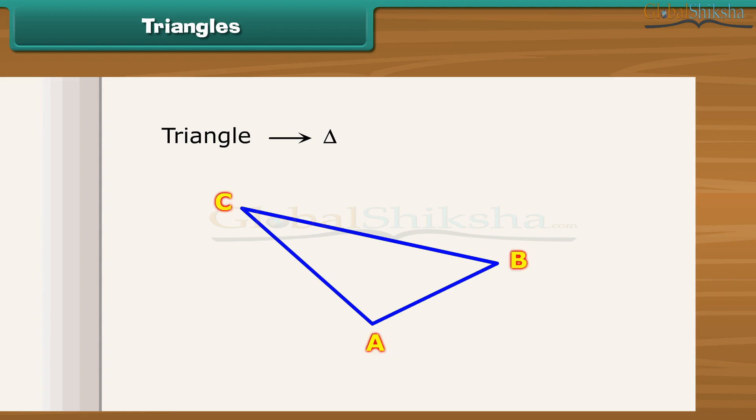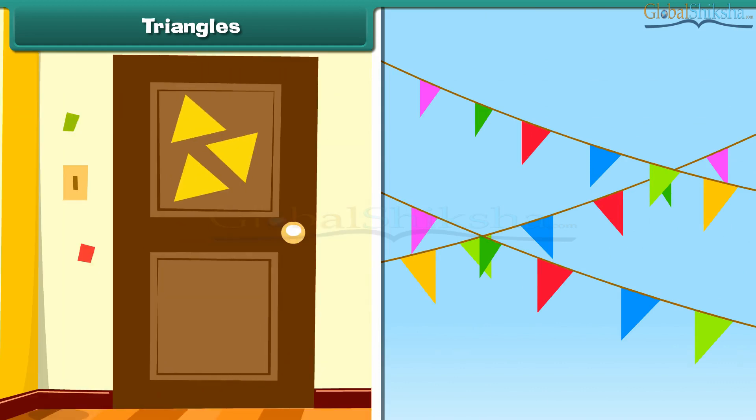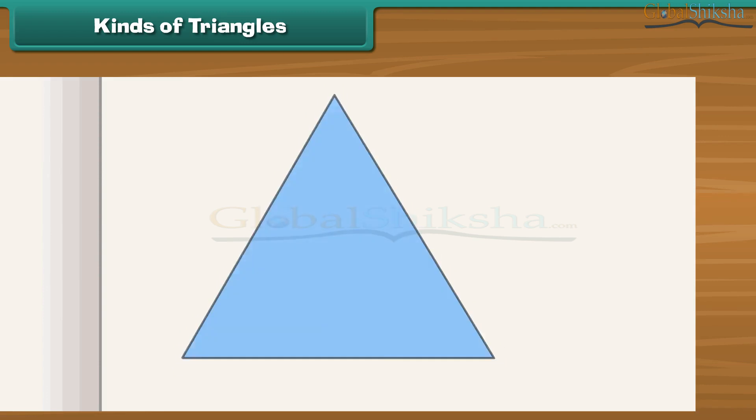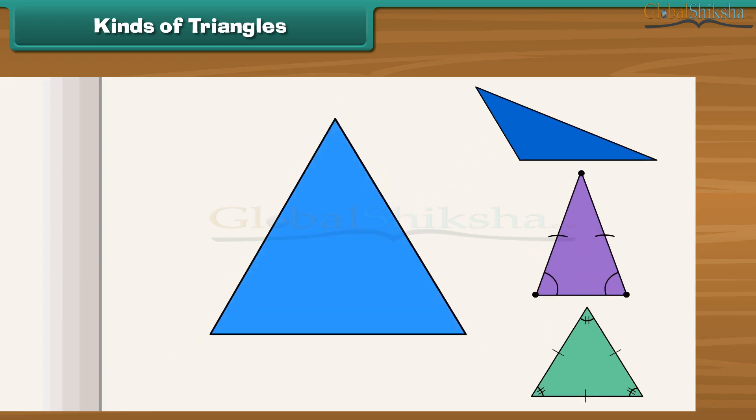Friends, can you recall some figures which are triangular in shape? Notice the flags in the ground and the design at the top. These are triangles. Triangles can be classified into three types depending upon the number of equal sides that they contain.